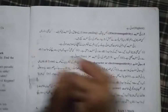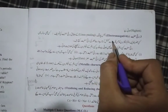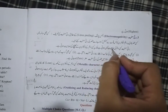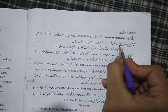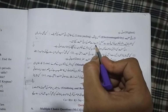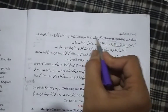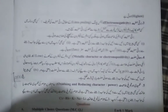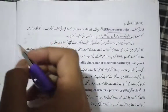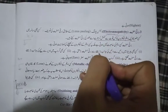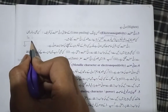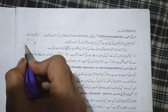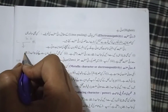We have to know how electronegativity varies in the periodic table. Electronegativity is the capacity of attracting electrons. When we go from left to right in a period, electronegativity increases. It decreases when we go from right to left, and it also decreases when we go from top to bottom in the periodic table.